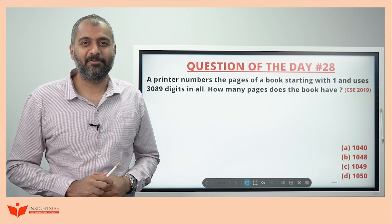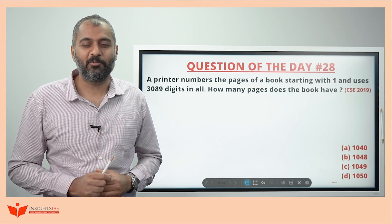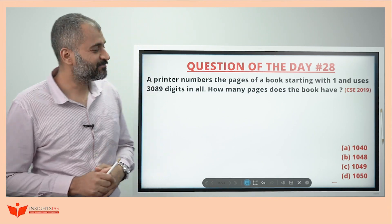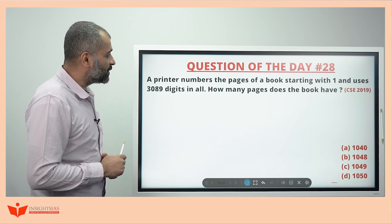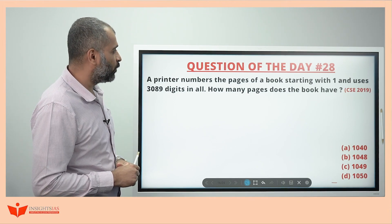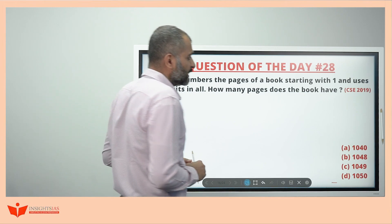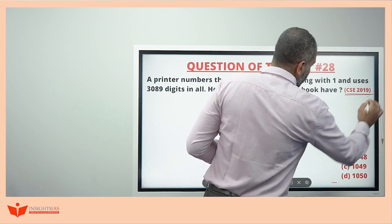Hello everyone, I am Samanth Ghoda, CSAT faculty at Insights. I welcome you once again for the CSAT series question of the day 28. A printer numbers the pages of a book starting with one and uses 3089 digits in all. How many pages does the book have? This is taken from the year 2019.